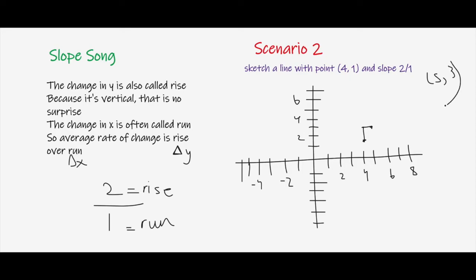Now we can sketch a line right here going between these two points. But what we can do is use the rise over run formula again to sketch out another point.